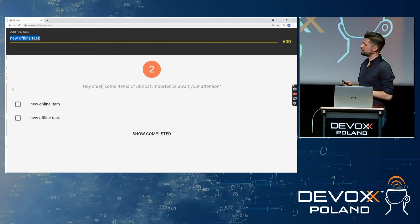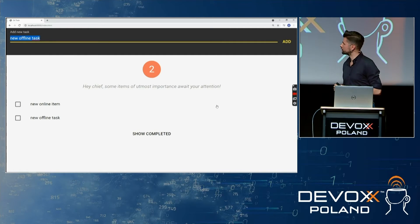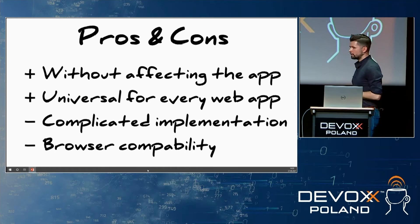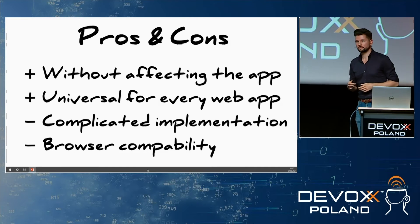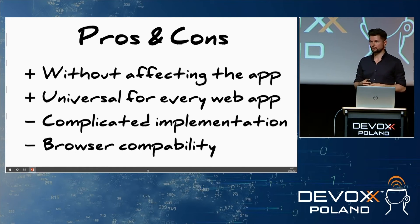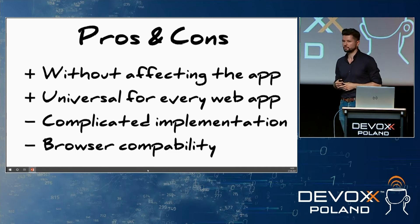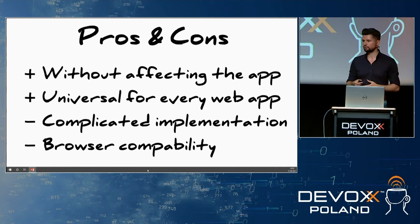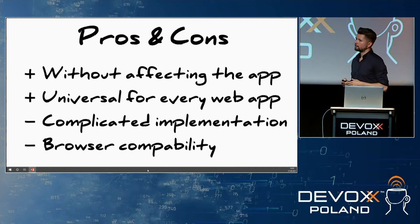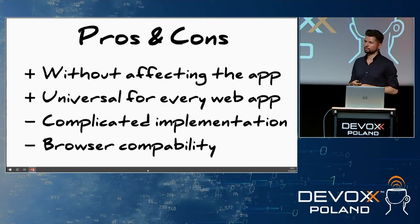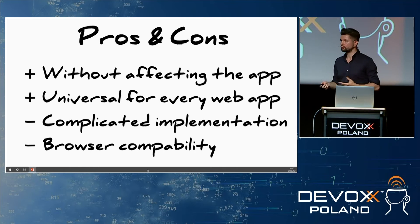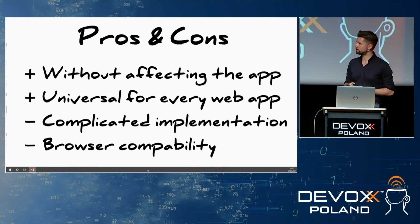It all happened automatically because of the proper logic inside the service worker script. That is how a simple application can work with service workers in offline mode. Now considering the pros and cons: the obvious benefit is that we can implement offline first functionality without affecting existing applications — no need to refactor existing code. This solution also works with any frontend framework or library.